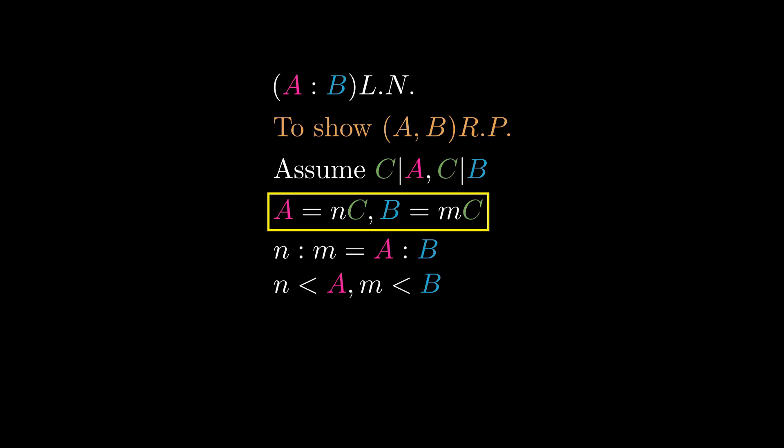But N is less than A and M is less than B, so we've contradicted that A to B is in least numbers. So A and B are relatively prime.